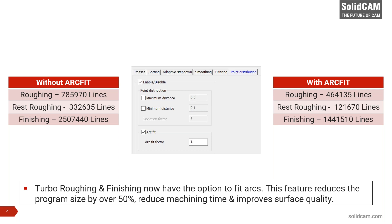There are a couple of very important advantages with arc fit. First, your G-code size comes down dramatically. The other major improvement is the way the machine behaves when cutting. Some machines don't have the computing power to move fast through thousands of points instead of a single arc. Even now, some machines cannot handle thousands of lines. Arcs can greatly improve machine performance as well as surface quality — there is a difference in surface quality when cutting an arc versus cutting an area made up of thousands of points.